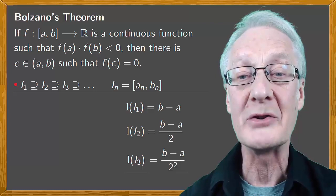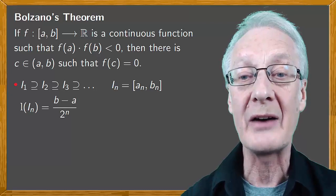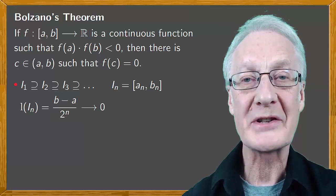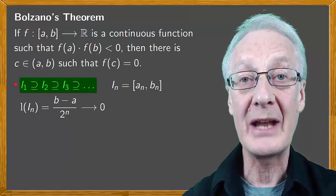The important thing is that because we have 2 raised to the n in the denominator, the sequence of lengths tends to 0 as n tends to infinity. When we have a succession of intervals like this, each interval closed and including the next one, the intervals are said to be nested.